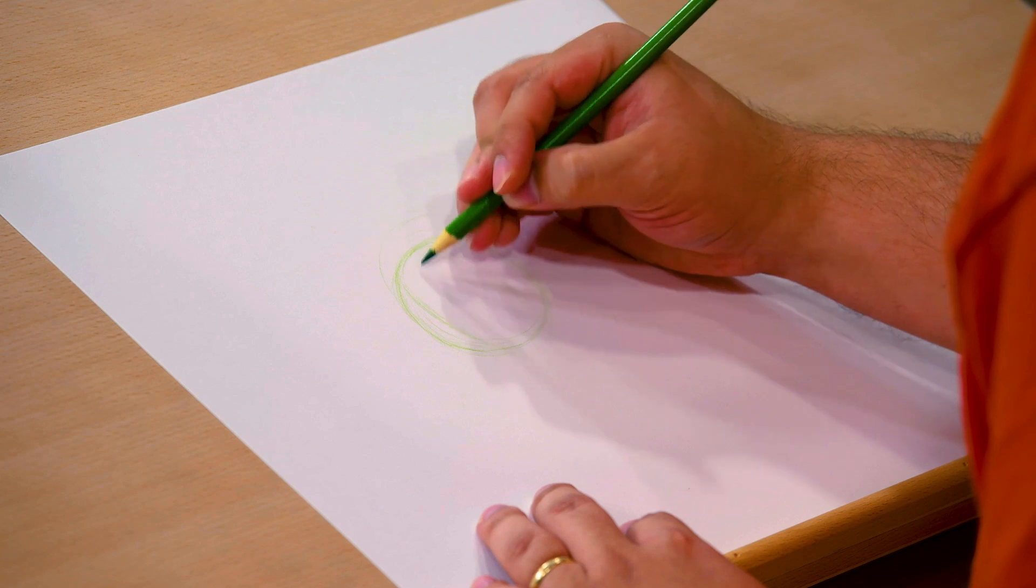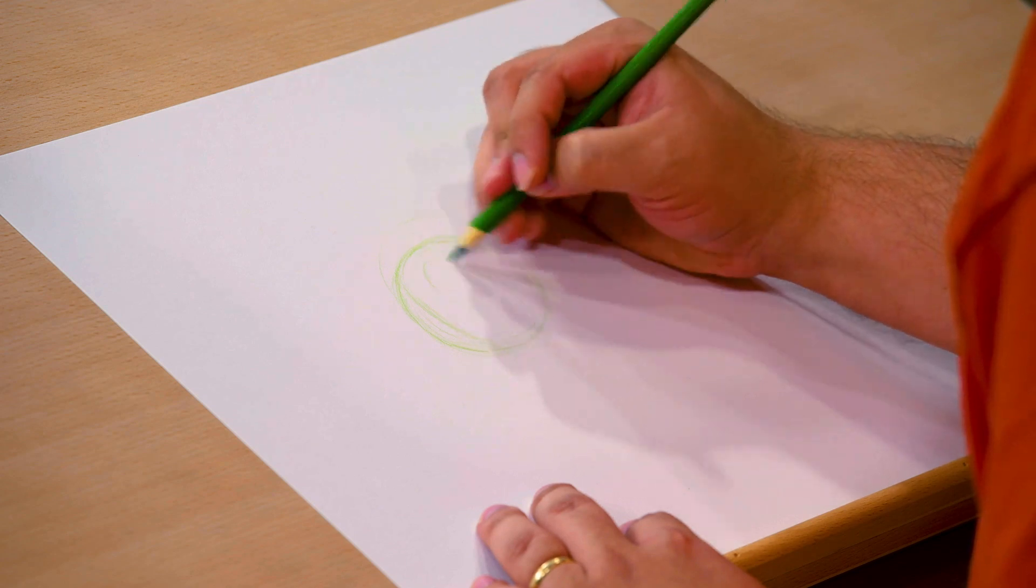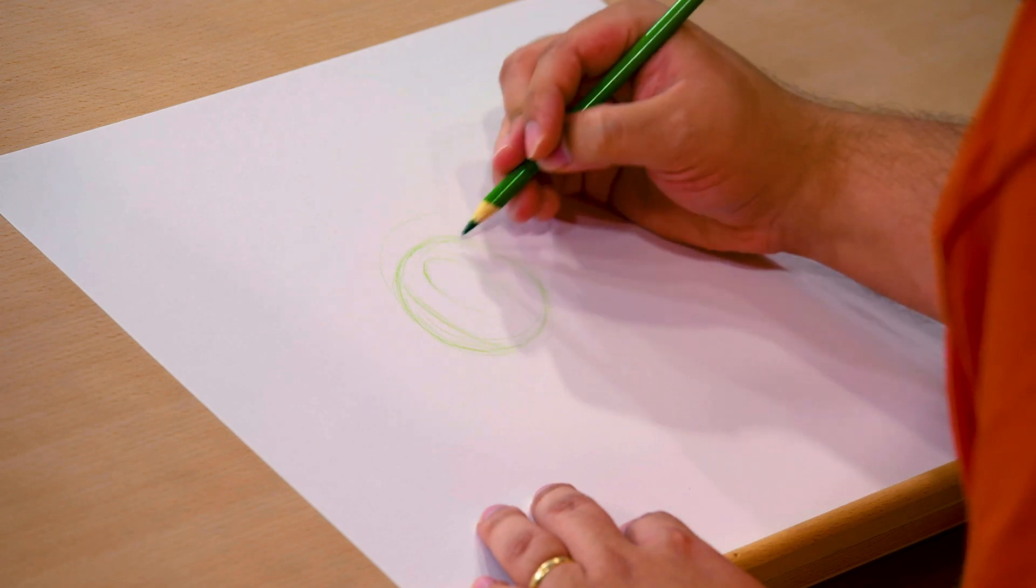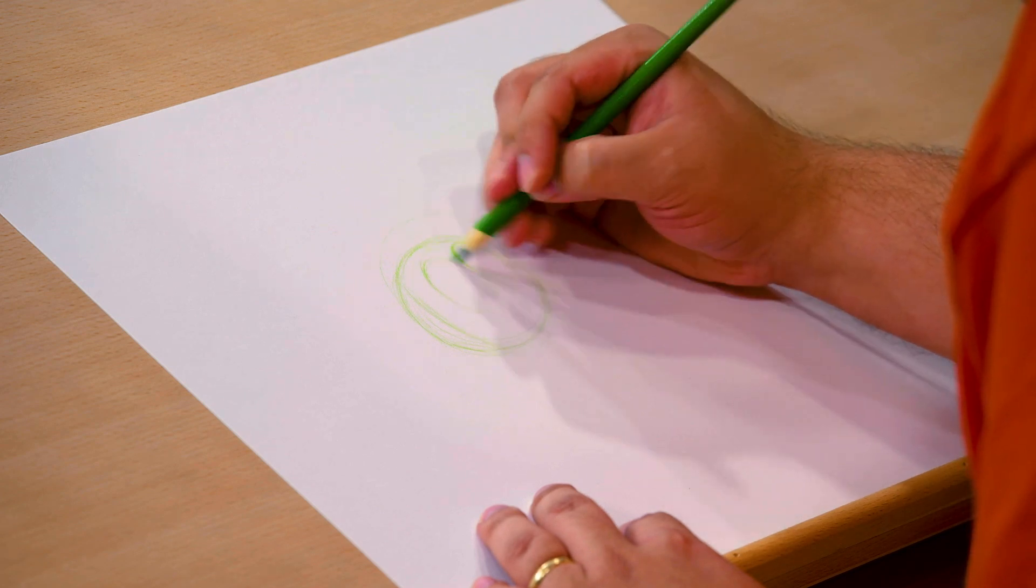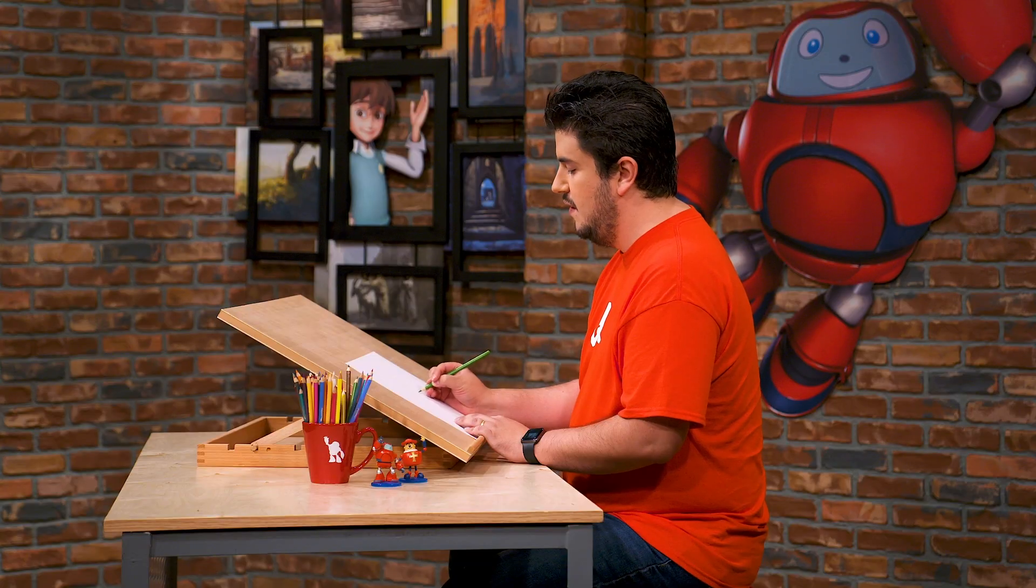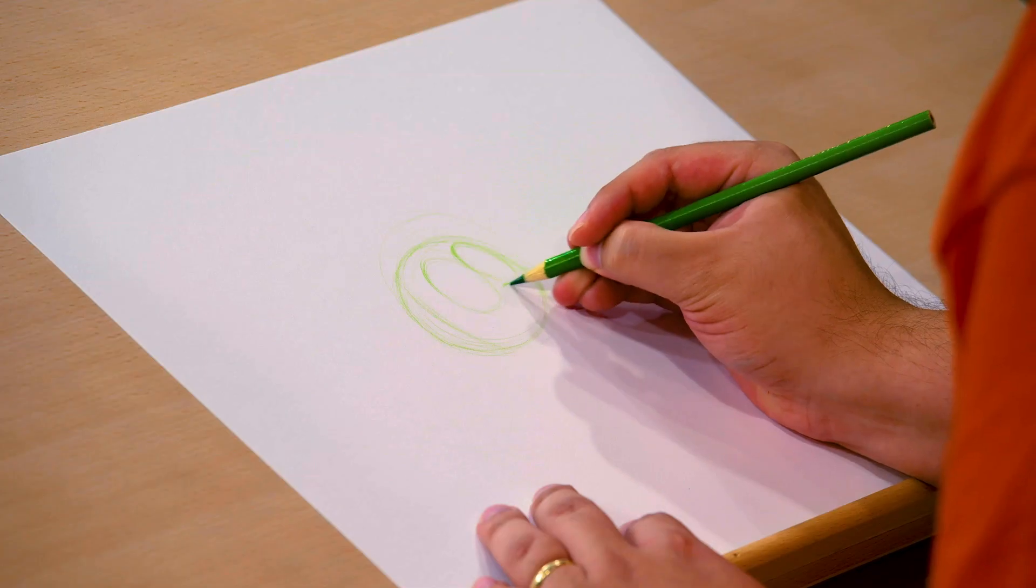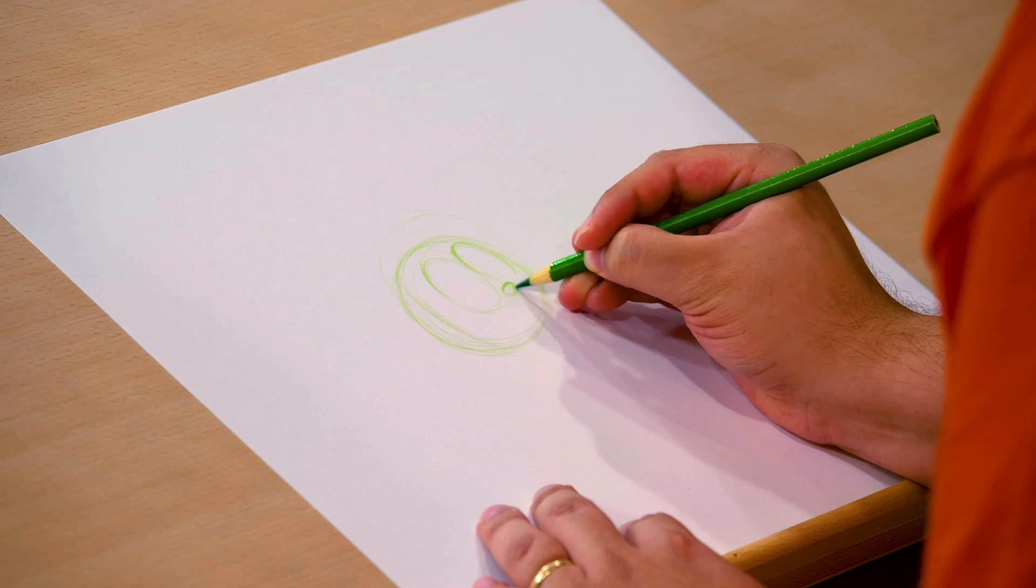We'll go ahead and start with the face on this one. Go ahead and do the big eyes, oval eyes. And then we'll go ahead and do a little oval nose, but it's a sideways oval right in between there.